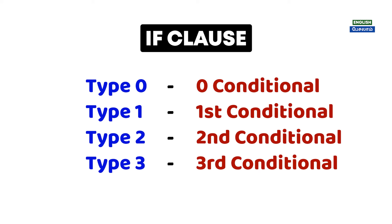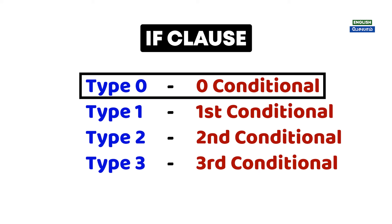Type 0 is the zero conditional. Type 1 is the first conditional. Type 2 is the second conditional. Type 3 is the third conditional. Now we can see the Type 0 conditional class.